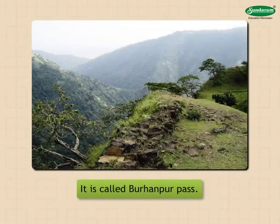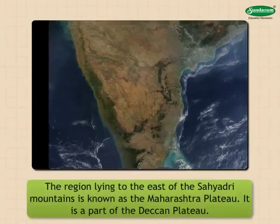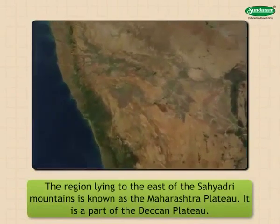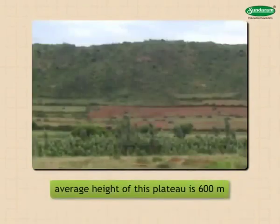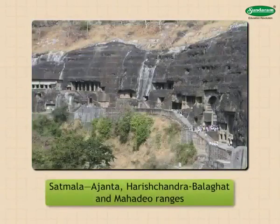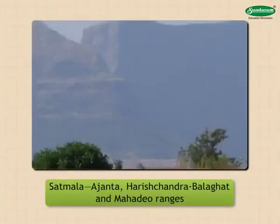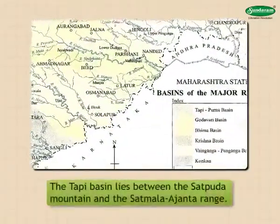The Maharashtra plateau: the region lying to the east of the Sahyadri mountains is known as the Maharashtra plateau, which is a part of the Deccan plateau. The average height of this plateau is 600 meters. A number of hill ranges and river basins can be seen over this plateau. Hill ranges branching off from the Sahyadri mountains include the Satmala, Ajanta, Harishchandra, Balaghat, and Mahadeo ranges.